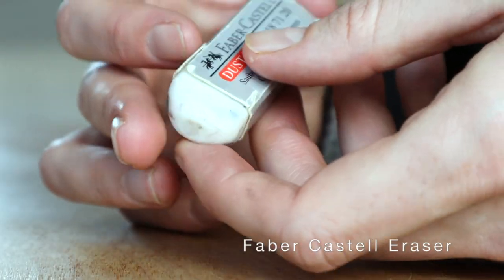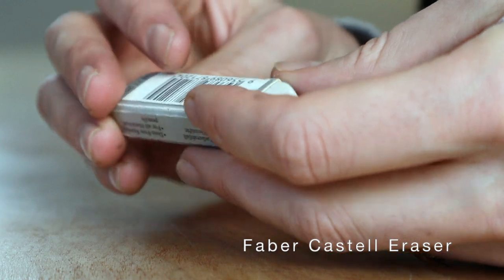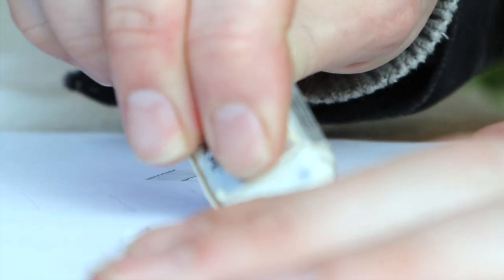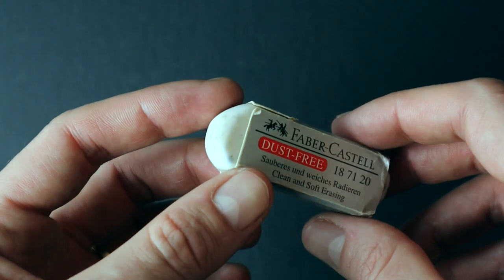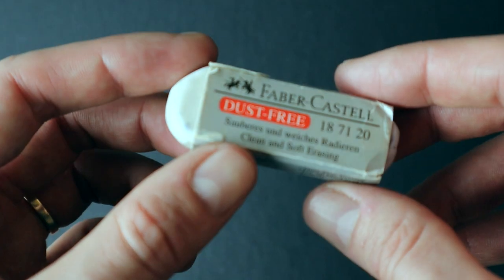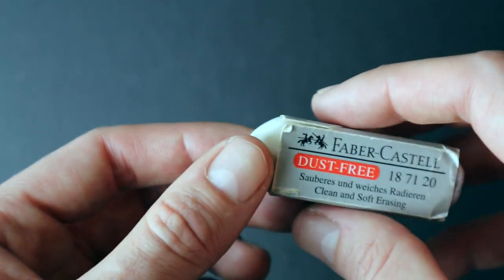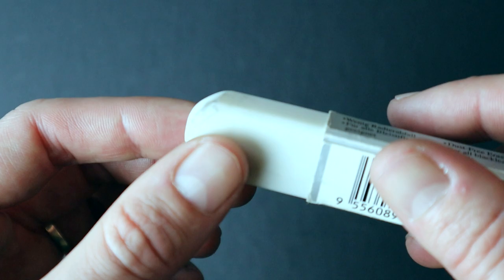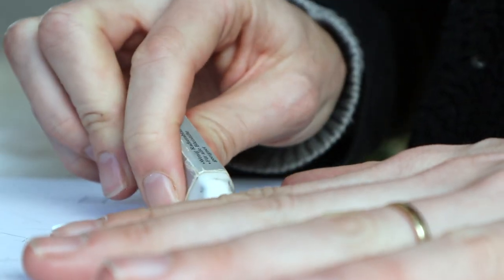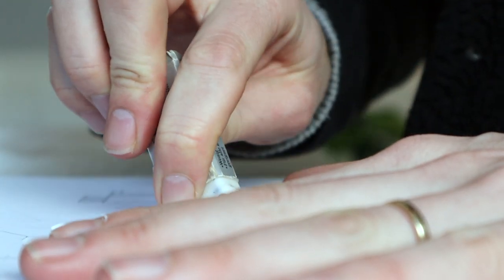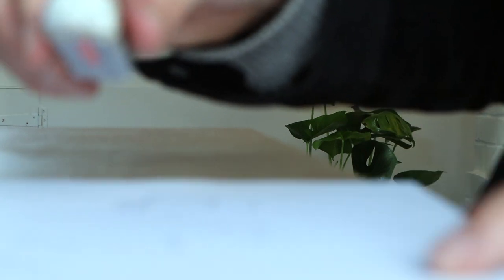I don't use an eraser that often, but when I do, I find myself using this one by Faber Castell. Apparently, it erases with less dust than other ones out there. I wouldn't say it's dust-free, but there doesn't seem to be a huge pile of dust when I'm using it. What's great about this one is that it works for both graphite and color pencil.